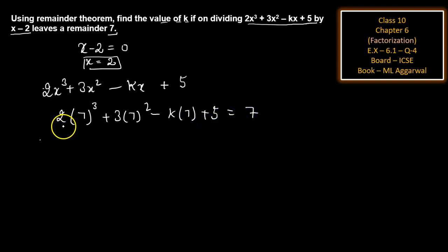7 cubed is 343. So 343 × 2 plus 3 × 49 minus 7k plus 5 equals 7.